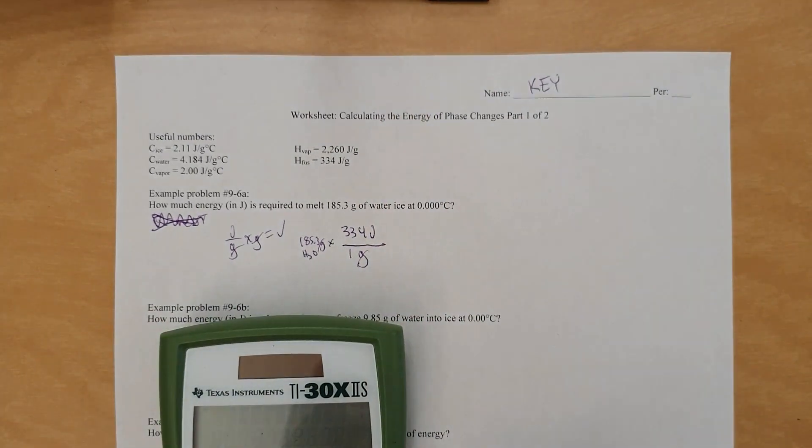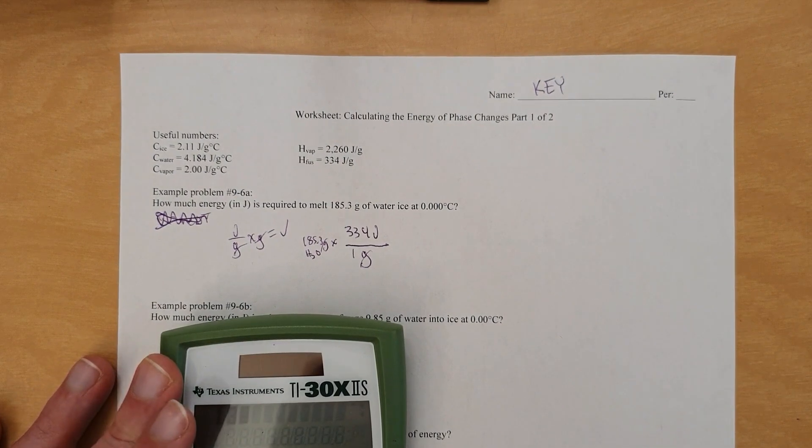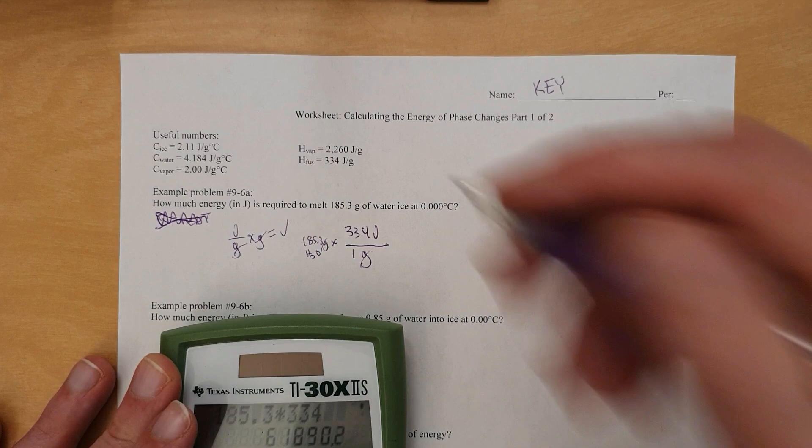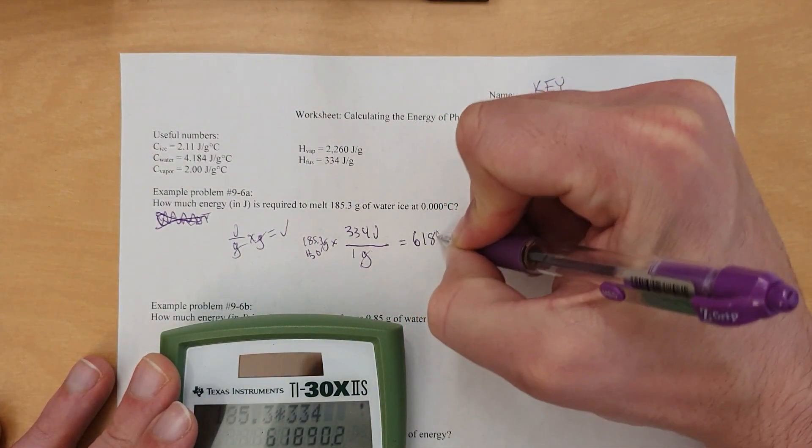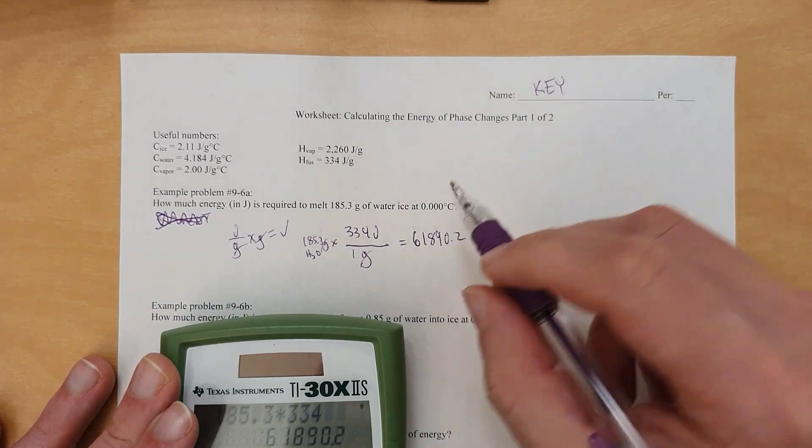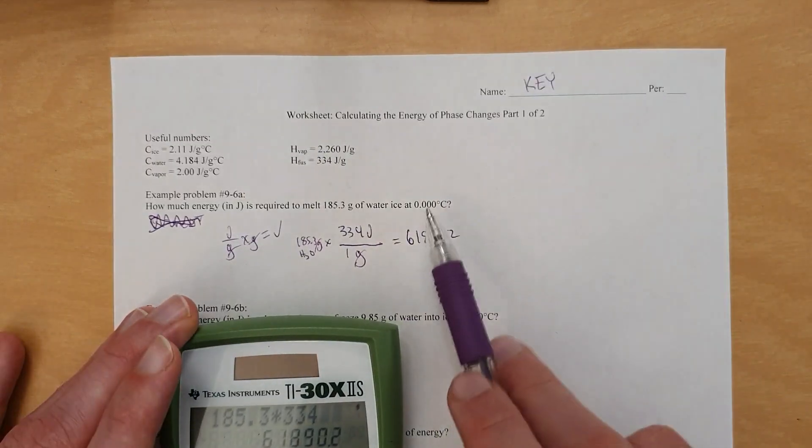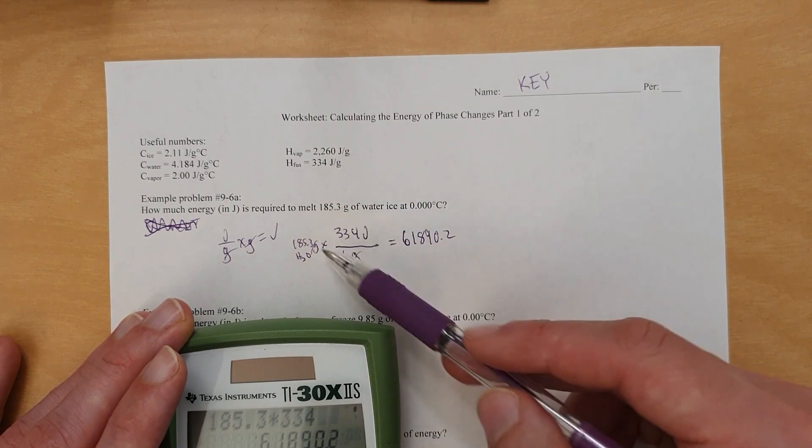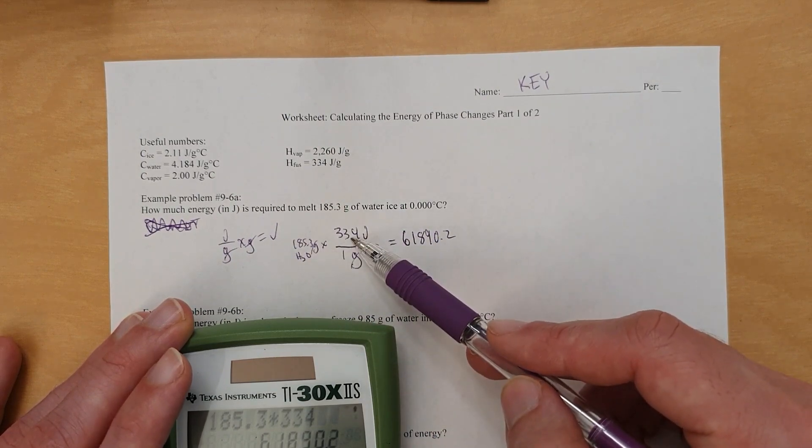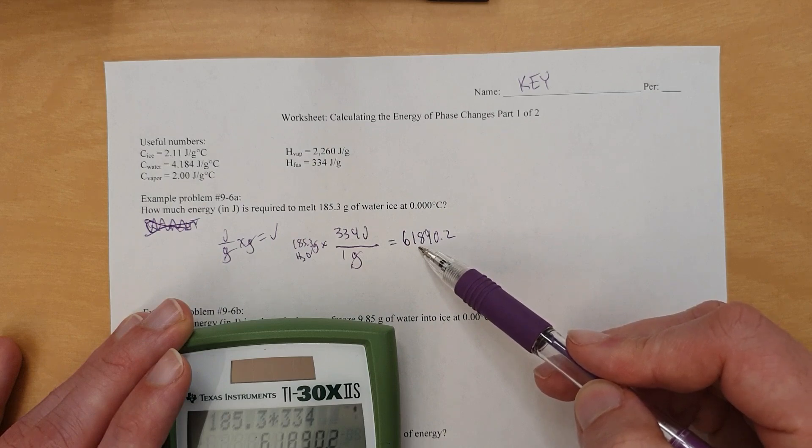So let's do that. 334 joules per gram. We can put a 1 just to fill in something there. And you can either have it times 185.3, or you can do 185.3 grams times this, and it is H2O. I guess I'll put the chemical identity just because. Either way, whether you put this here or put it here, you get gram cancel gram to give joule for your answer. So that's how you know you're doing it right.